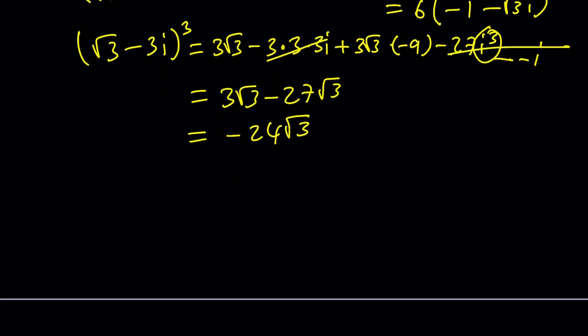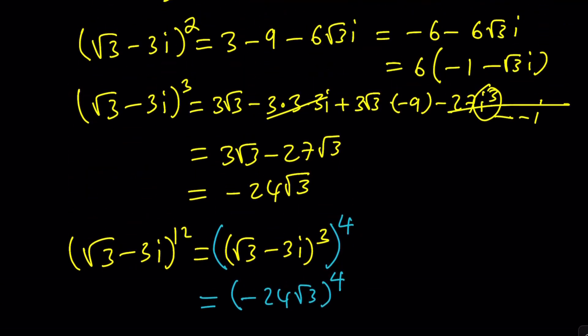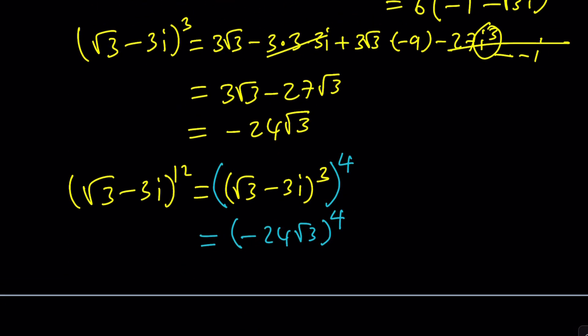Let's go ahead and use that now. We have this to the 12th power. But I can write it as this expression cubed first. And then raised to the fourth power. Because 3 times 4 is 12. But the third power gives us negative 24 root 3. And then I'm going to raise it to the fourth power. Let's simplify this first. And then we can kind of take care of that divided by 2 to the power 12. Make sense?